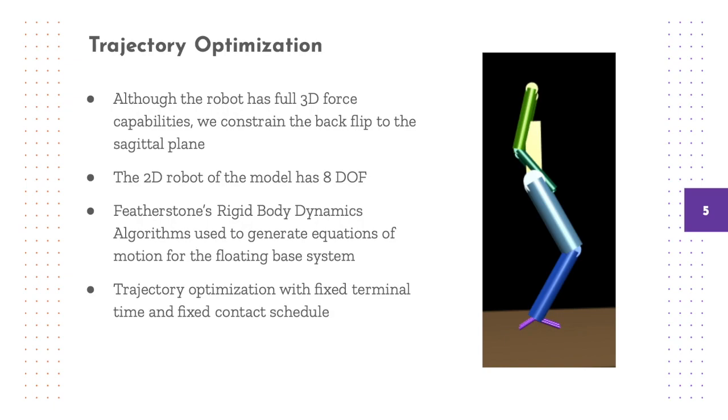Importantly, the trajectory optimization has a fixed terminal time, meaning that it occurs over a fixed duration. Furthermore, the durations of the stance and flight phases are also fixed beforehand.